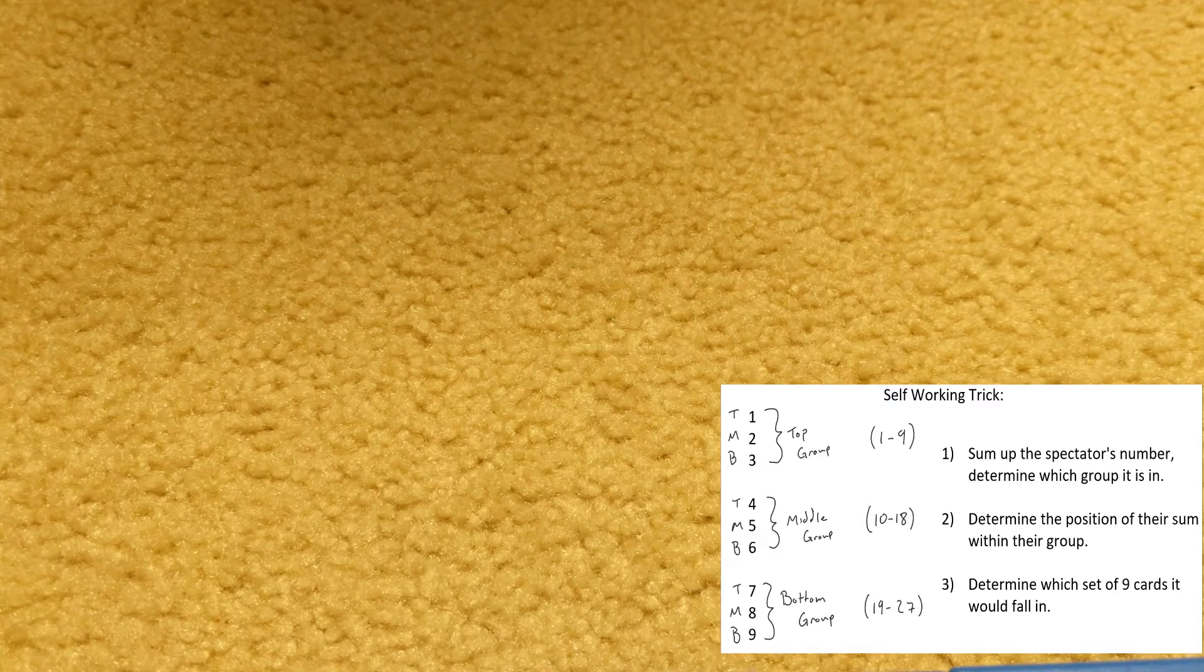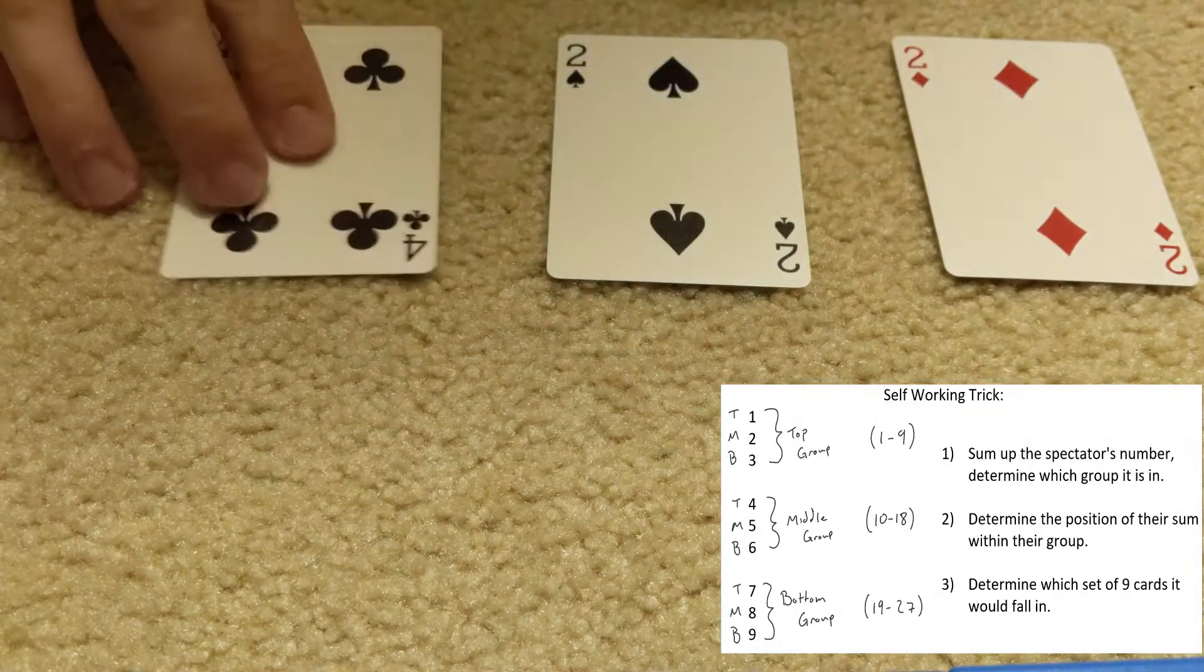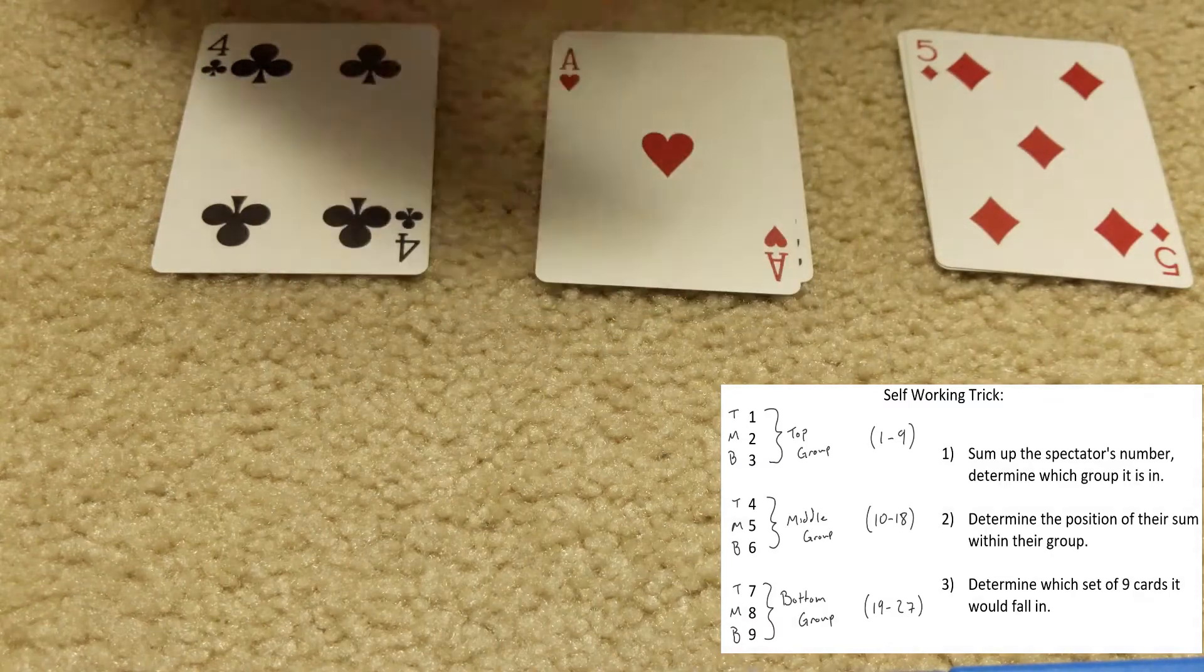Alright, so let's do an example. We saw the Seven of Diamonds earlier, and let's say that the spectator picks the number 11. So while you are putting the cards face up into 3 piles, you're going to sum up the digits in the number they've selected, in this case 11.